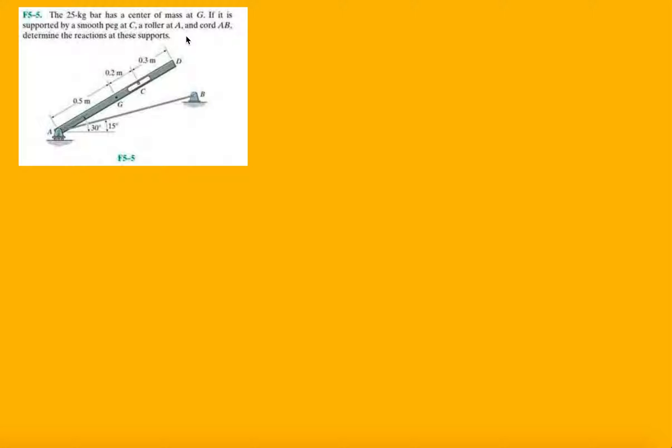Welcome back to problem 5-5 from the fundamentals of chapter 5. Let's continue doing pretty much exactly what we've been doing in the past four problems. This problem requires you to find the reactions at a smooth peg at C and the roller at A, and the tension in cable AB. So the first thing we do is draw our free body diagram.